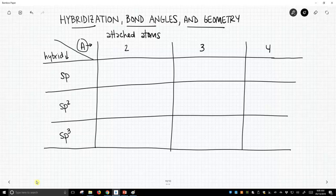So when we have two attached atoms we have to be at least sp hybridized. If we are sp hybridized the geometry is going to be linear with a bond angle of 180 degrees.